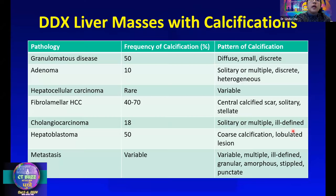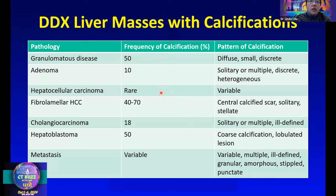Calcifications are a helpful feature to narrow the differential. We frequently see granulomatous disease with diffuse small punctate calcifications throughout the liver. Fibrolamellar HCC can calcify, usually at the central stellate scar. Other masses such as adenoma and conventional HCC tend not to calcify. Metastases can also calcify depending on the source of the primary tumor.